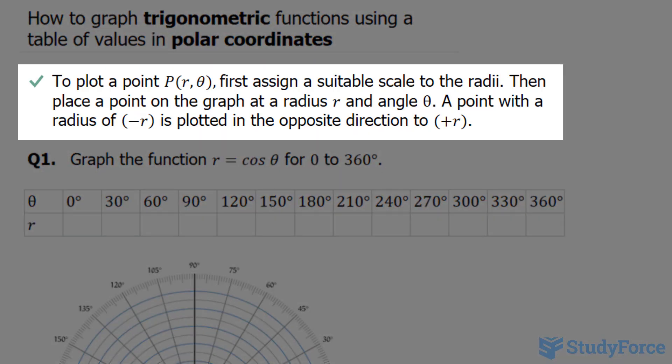To plot a point P in reference to its radius and its polar angle, first assign a suitable scale to the radii. Then place a point on the graph at a radius r and an angle theta. A point with a radius of negative r — this part's important — is plotted in the opposite direction as positive r.